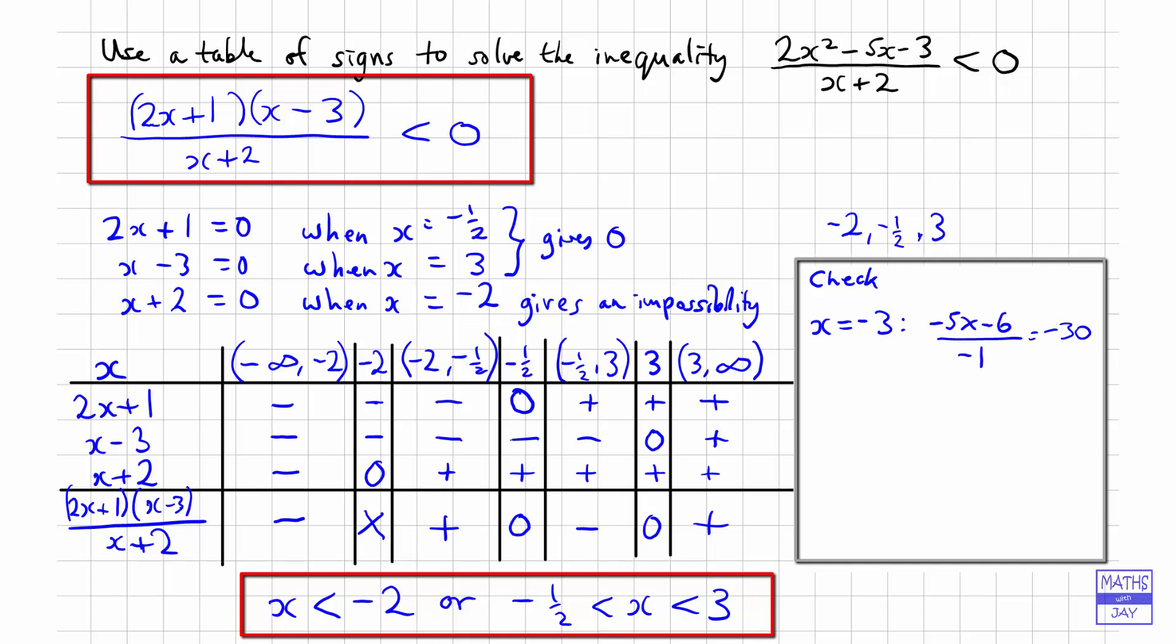And then let's choose the value between negative a half and 3. So a really easy value to check there will be 0. So then substituting x in as 0 in the original fraction gives us 2 times 0 plus 1 is 1. And then 0 minus 3 is minus 3. And the denominator, 0 plus 2 is 2. So that's equal to negative 3 over 2. Again, a negative value, so that's correct.